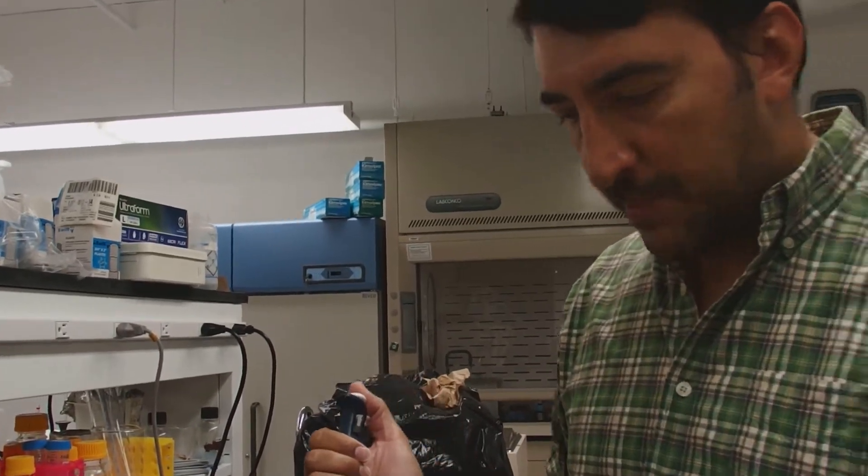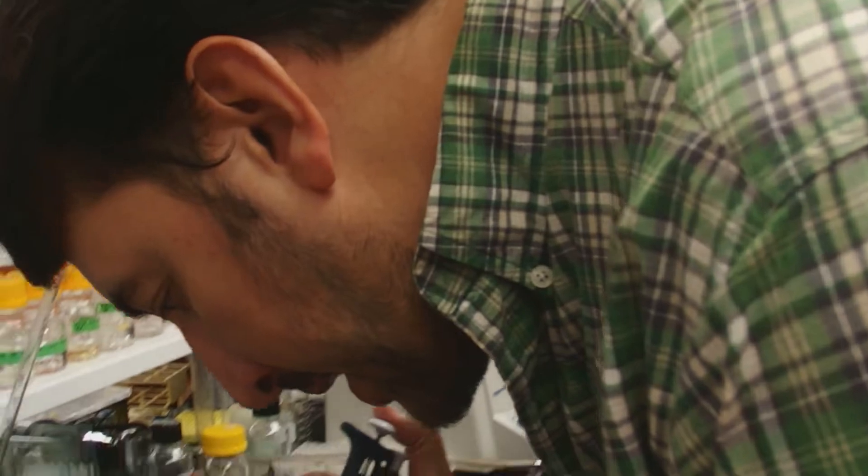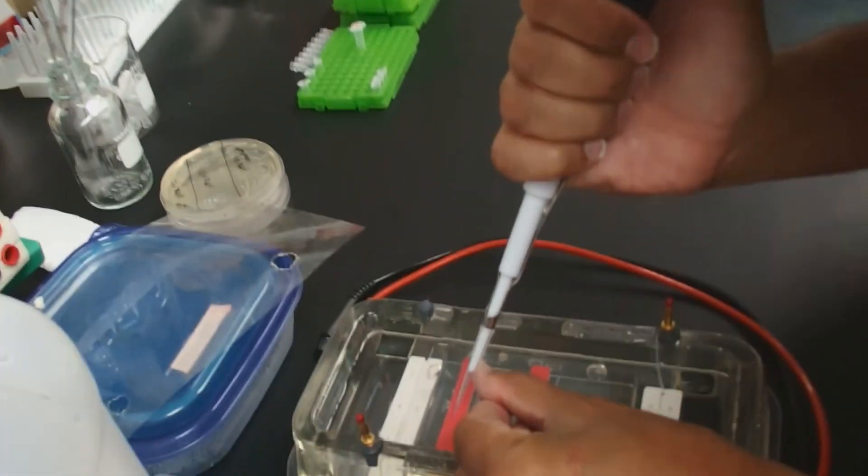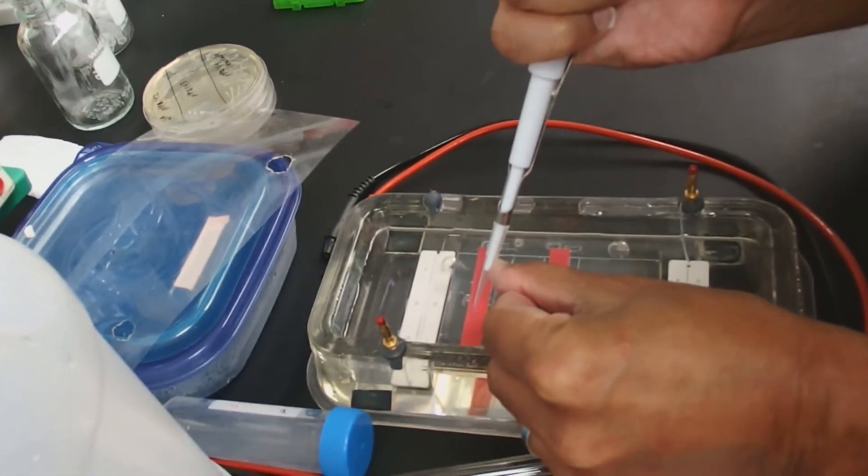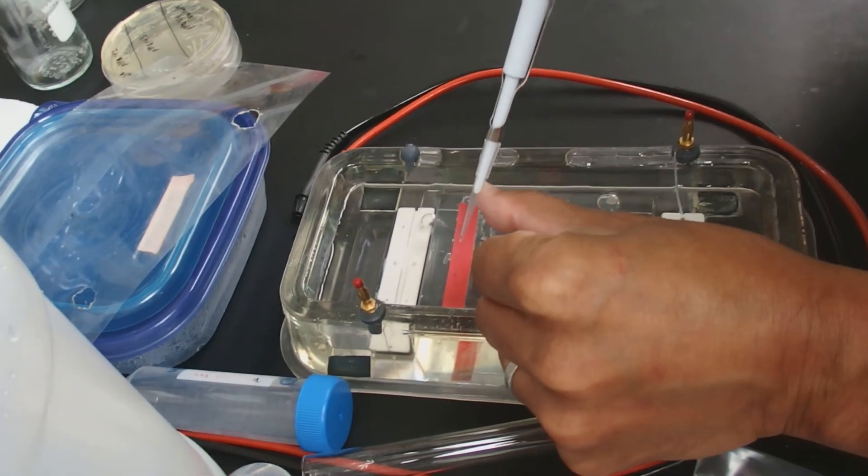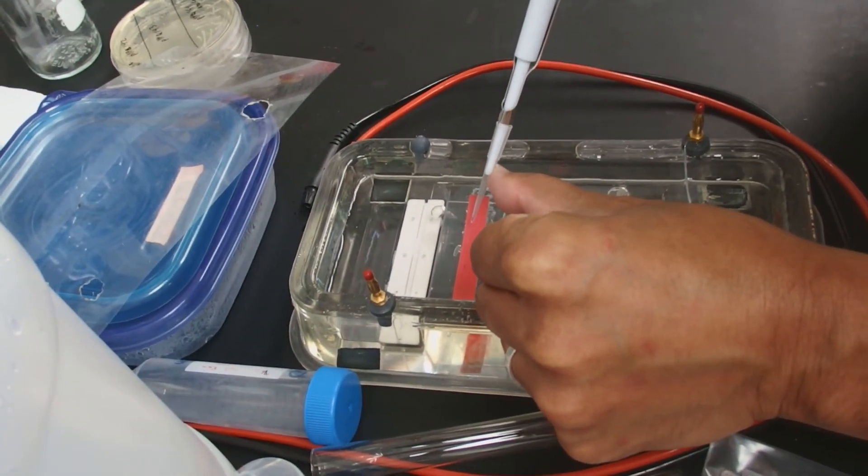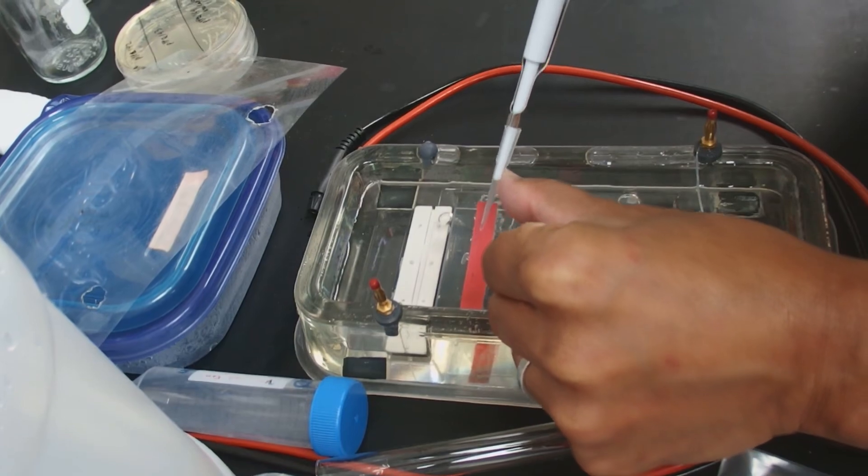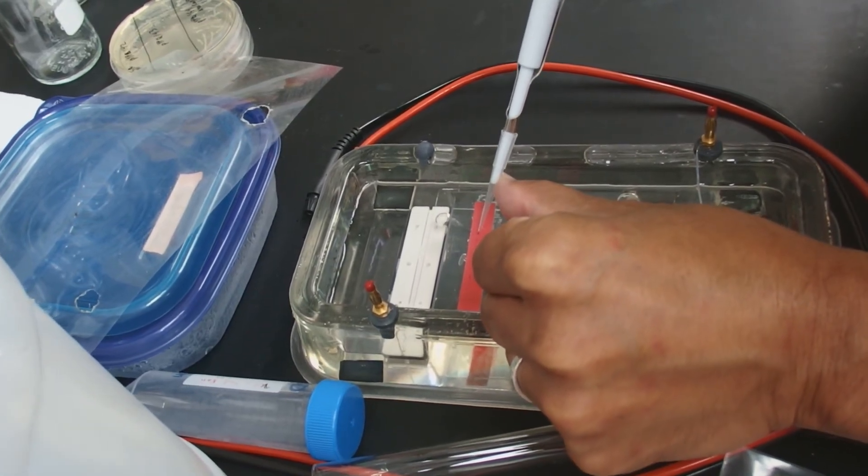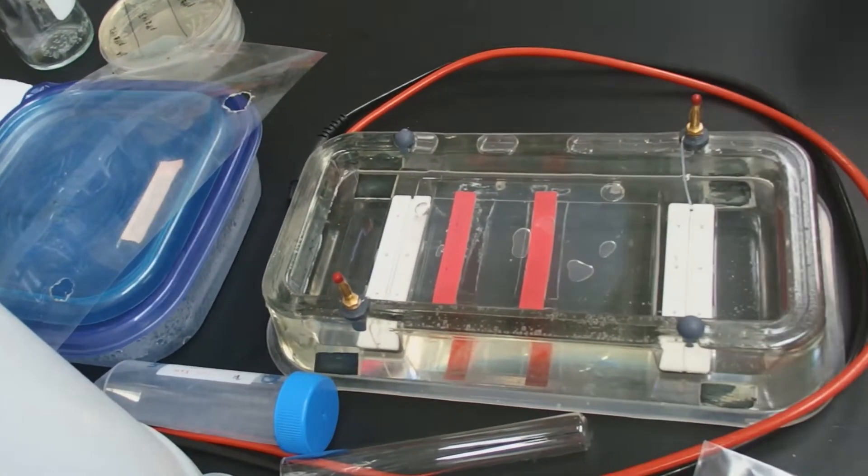Each one, that'll be about 1 microliter in each well. I'm going to get down here, and I have five samples, so I'm going to leave five spaces in between. One, two, three, and there are the ladders there.